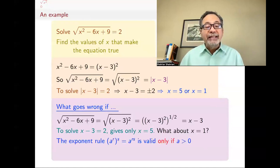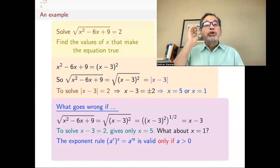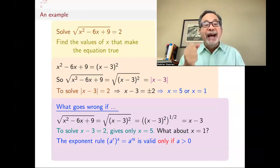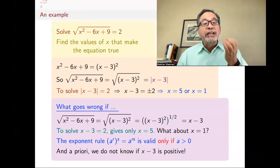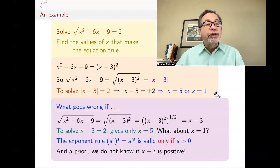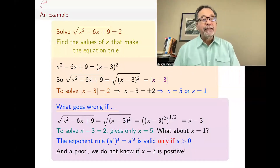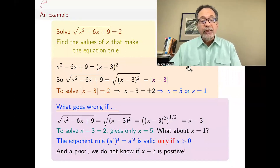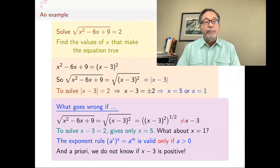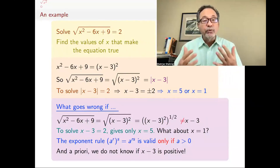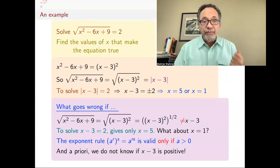What went wrong is that the exponent rule — a to the r, all to the s, equals a to the rs; when you have a power of a power you multiply the exponents — works only if the base is a positive number. It does not work for negative numbers. We didn't know before we started that x minus 3 is positive. In fact, if x is 1, x minus 3 is negative, and that rule does not work. Because we don't know if x minus 3 is positive or negative, it's not true that x minus 3 squared to the 1 half equals x minus 3. So you have to be careful about the power rule — it only works when the base is positive.